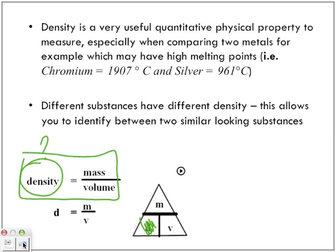If we're trying to find density, we cover up the density and we have mass on top of volume, which means density is equal to mass over volume. We already know that—I've given that to you—but that's how you can use the pyramid.